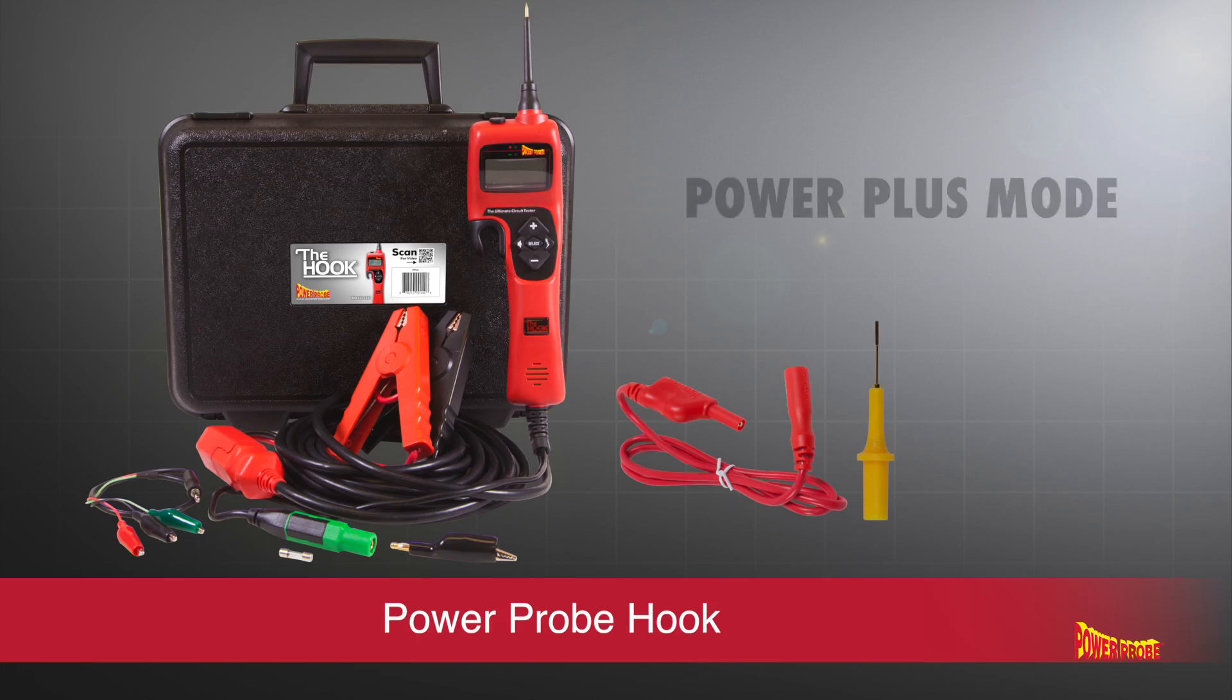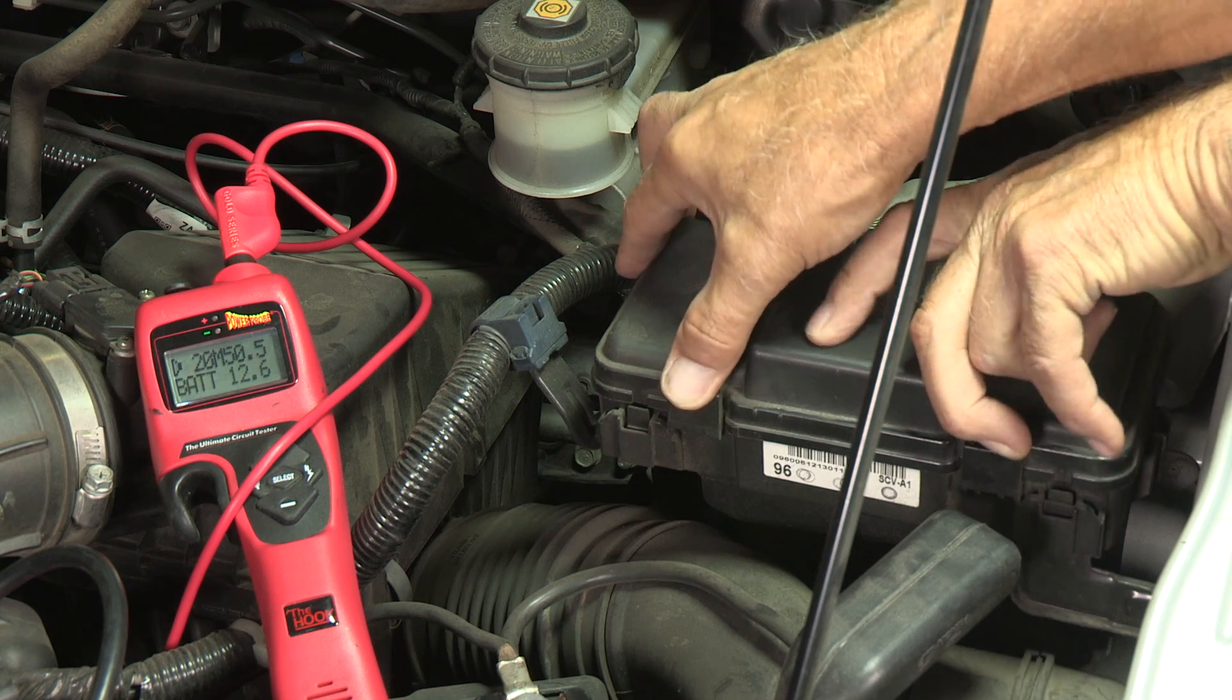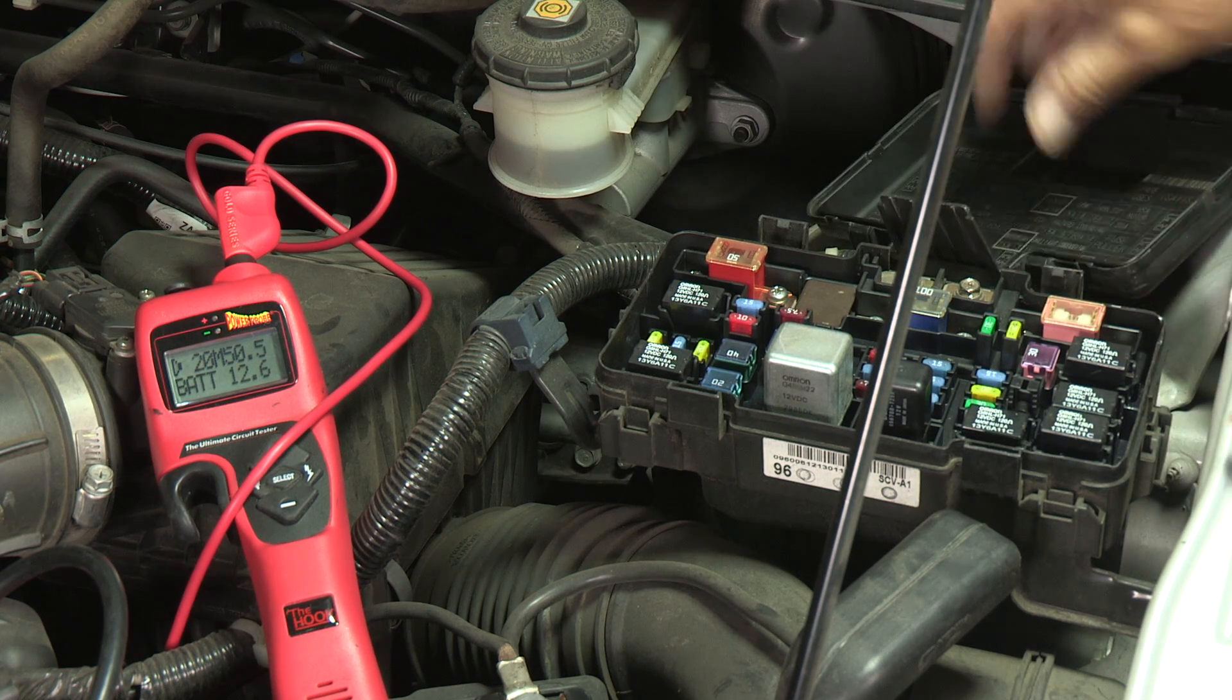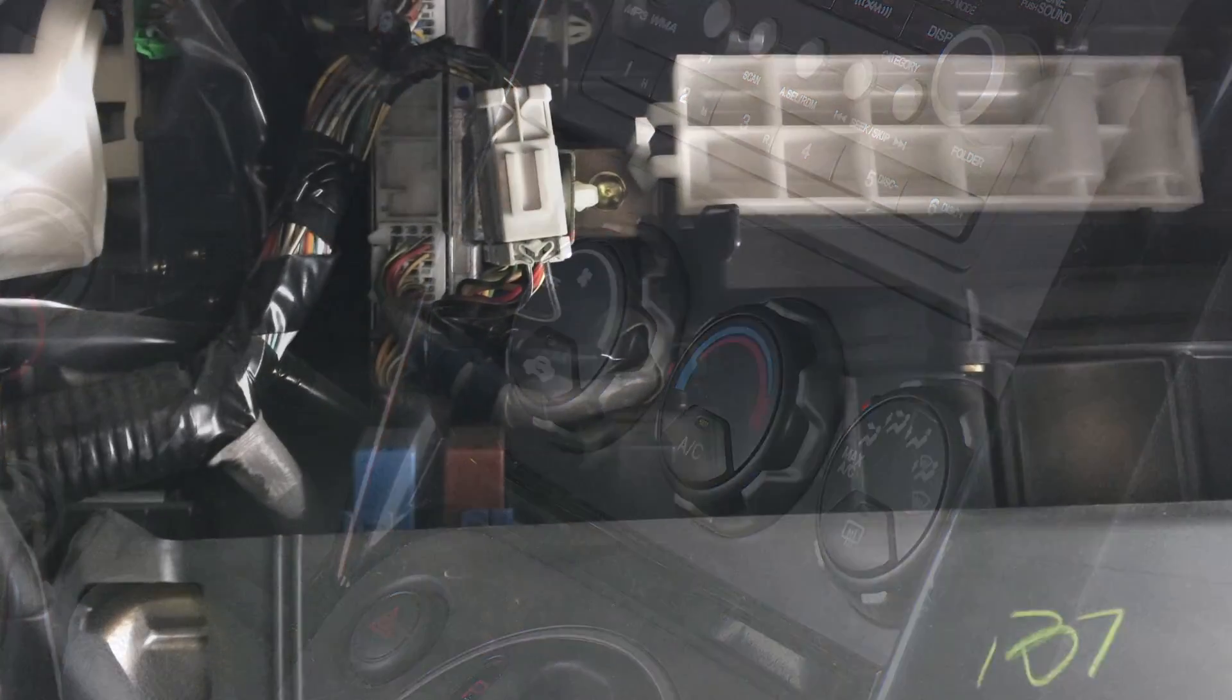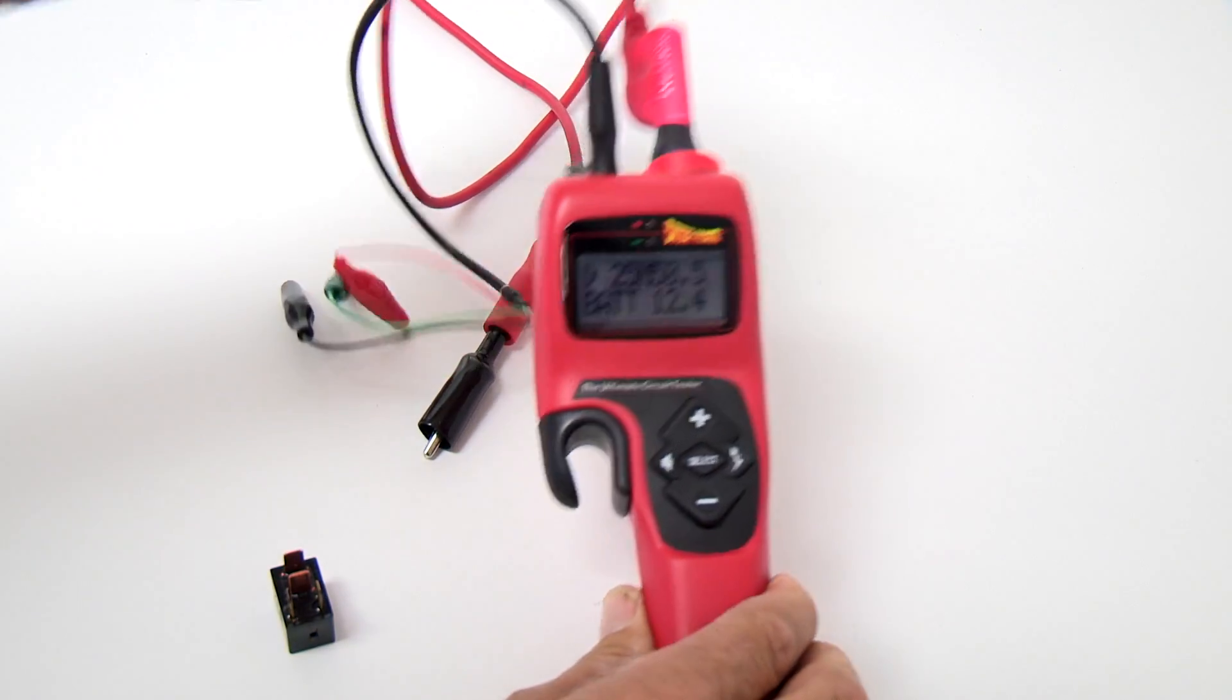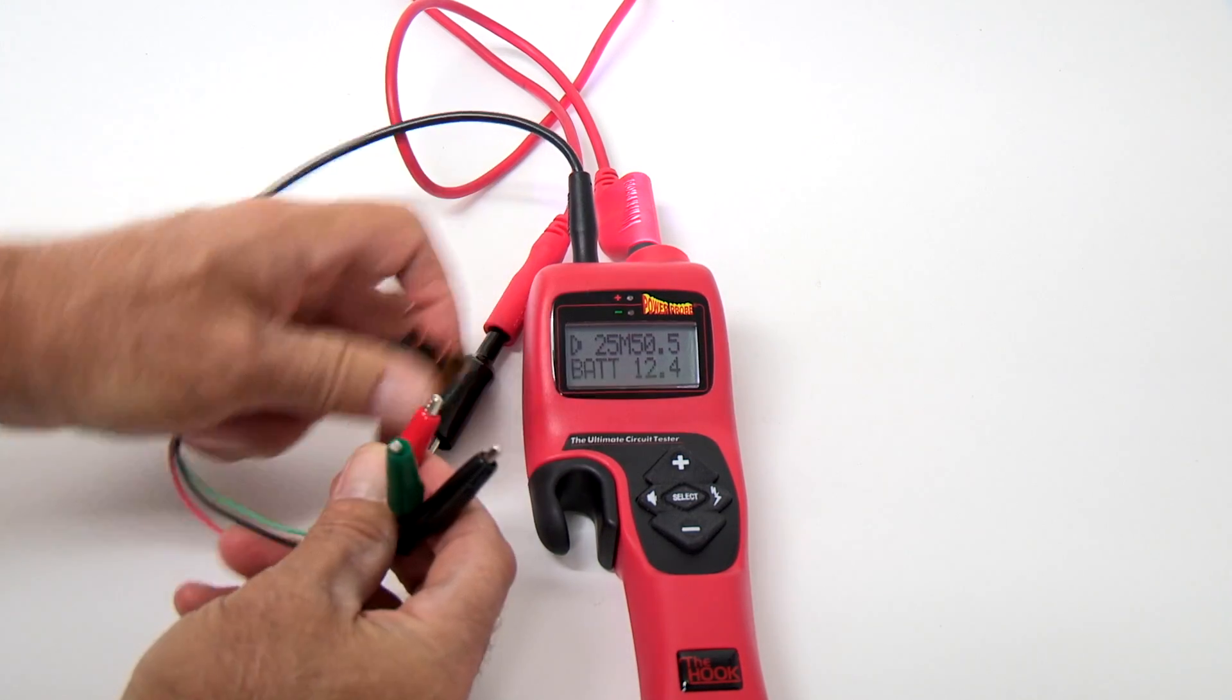I'll show you how to use the Power Probe Hook's Power Plus mode and what a time saver Smart Tip Advantage technology can be. We will use the hook to test the complete circuit at the relay terminals and then determine the health of the fan motor, wiring, AC controller, and the engine control module driver. We will also use the Power Probe Hook's built-in relay and continuity tester to test for intermittent relay operation.